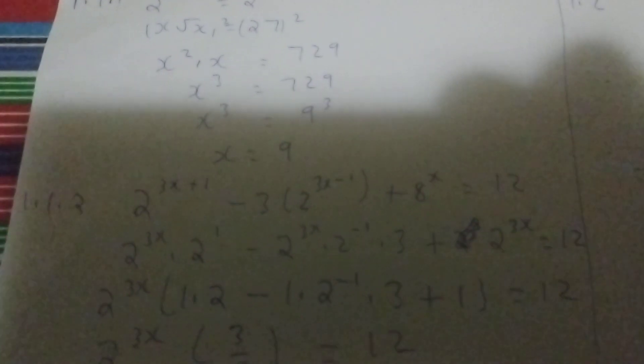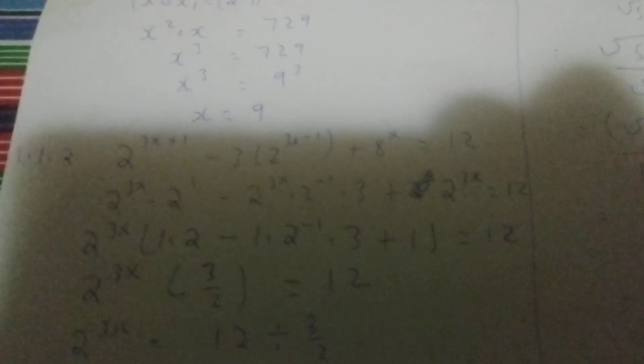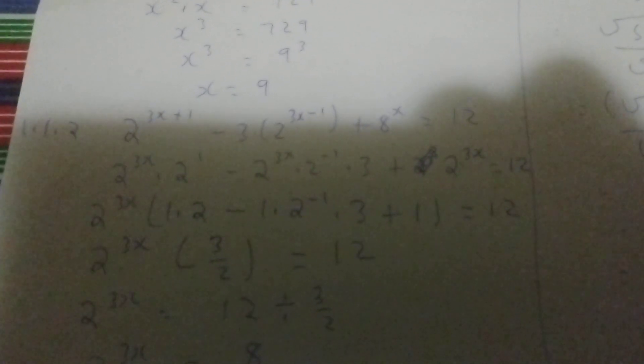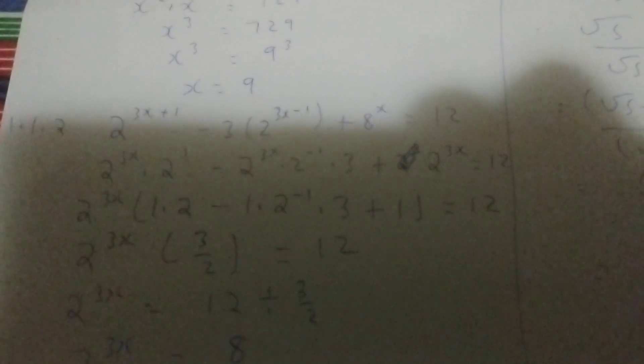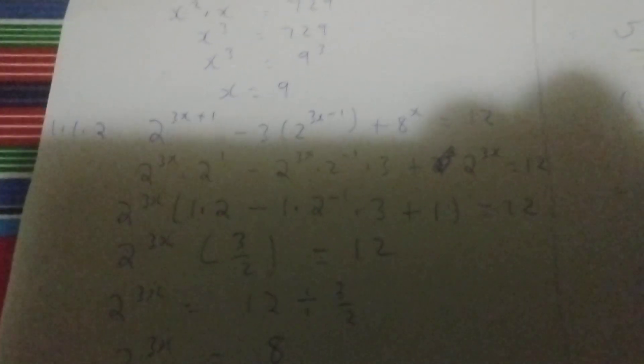The second question was also an exponential equation — a longer question. They gave: 2 to the exponent 3x plus 1, minus 2 to the exponent 3x minus 1, plus 8 to the power of x, equals 12. Whenever I deal with this type of question, the first thing is to find a common factor.